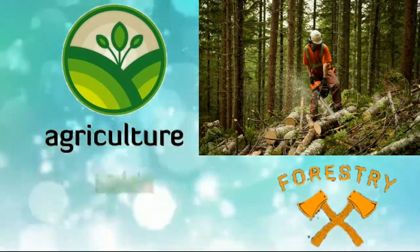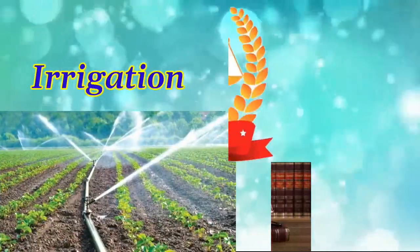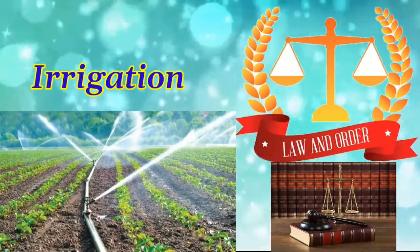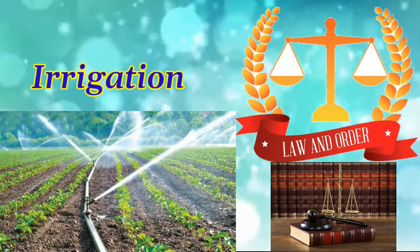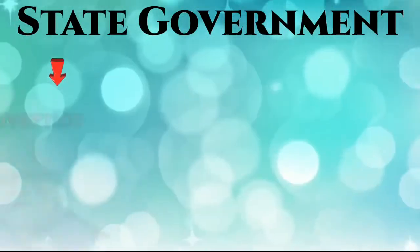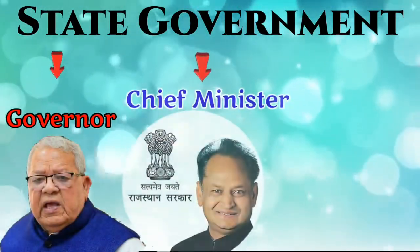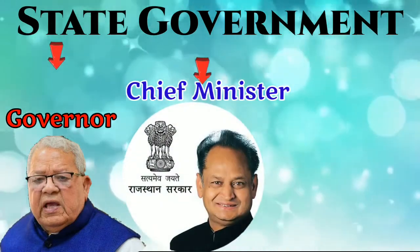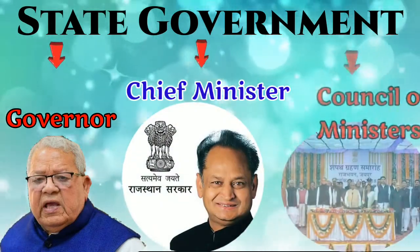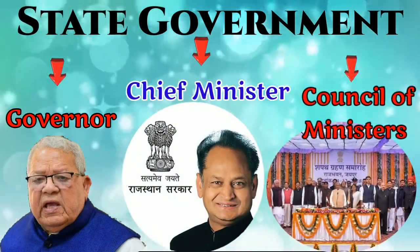The State Government also looks after agriculture, forestry, irrigation, law and order, etc. The State Government consists of the Governor, the Chief Minister, and the Council of Ministers.